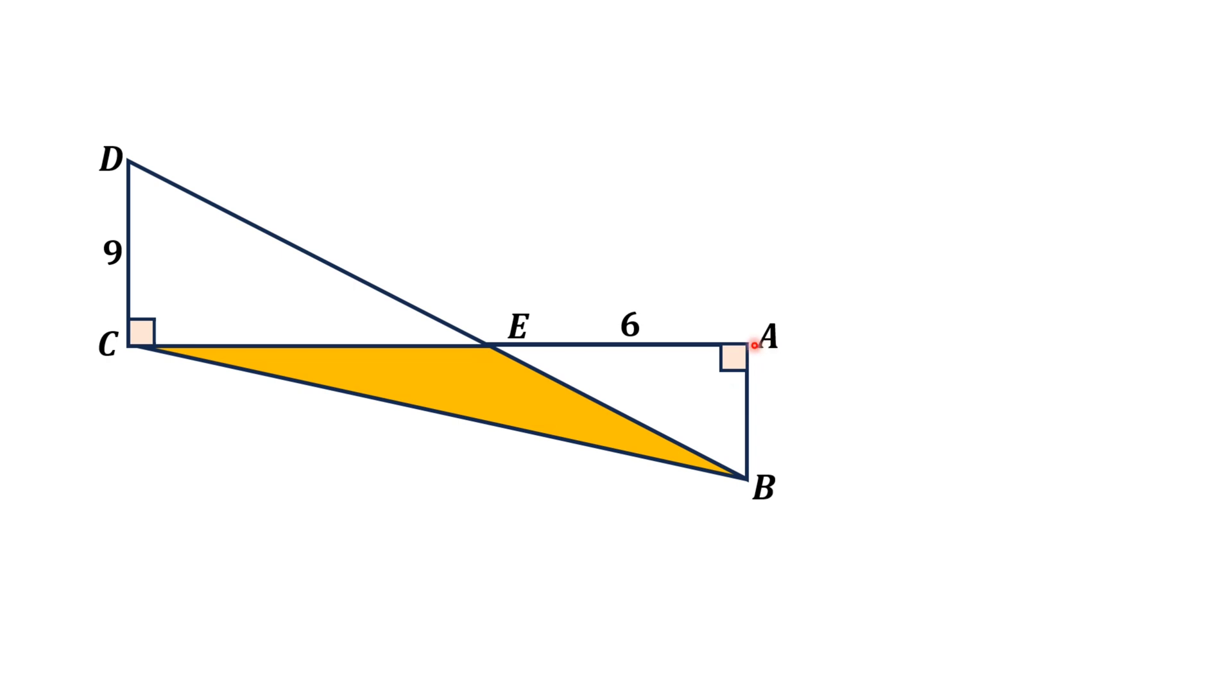Moreover, angle AEB is, let's say, alpha, then angle DEB is also alpha, because these are vertical opposite angles.